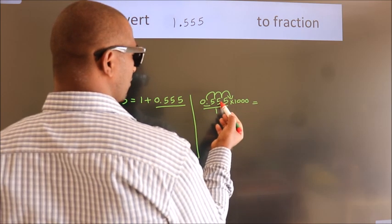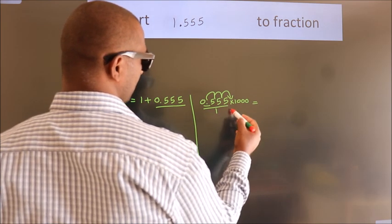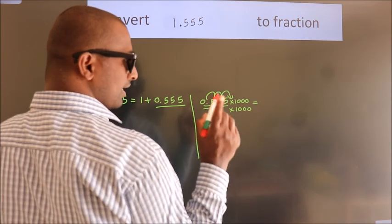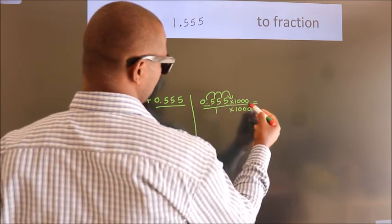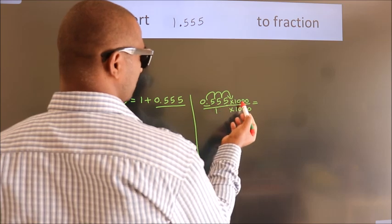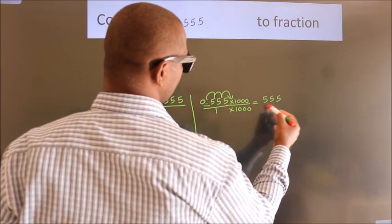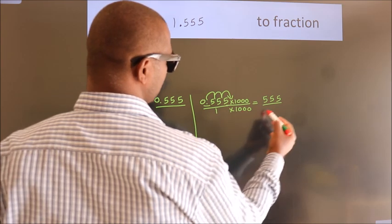Whatever number you are multiplying in the numerator, in the denominator also do the same. 0.555 into 1000 is 555. 1 into 1000.